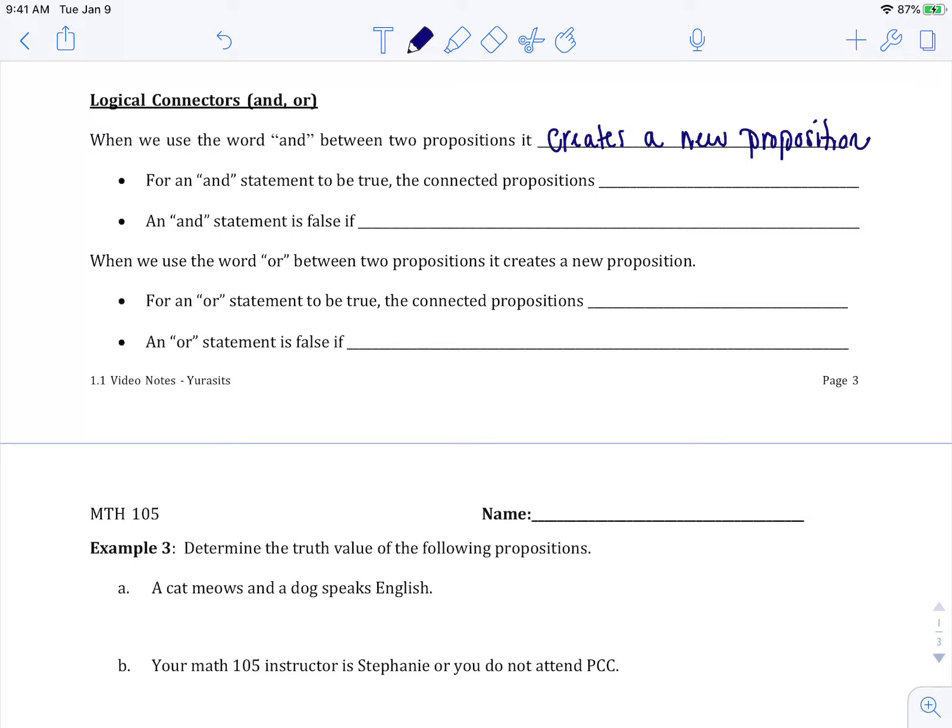For an AND statement to be true, if I say I am going out tonight AND I'm going to the movies, in order for that statement to be true, both things have to be true. In order for an AND statement to be false, either one is false. This will make way more sense once we do an example.